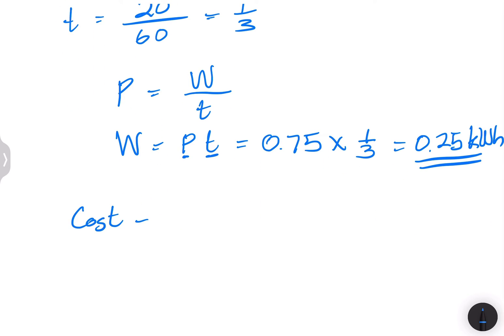So now we're calculating the cost. So the cost will be equal to the rate at which we charge multiplied by the amount of energy that we actually consumed. So I'm going to simply say, well, the rate is one rand and 20 cents multiplied by the amount of energy, which is 0.25.